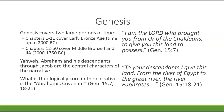Genesis covers two large periods of time. In chapters 1 through 11, it covers the early Bronze Age — that's the time up until 2000 B.C. Then from chapters 12 through 50, it covers what we refer to as the Middle Bronze I and Bronze IIA period, from 2000 to 1750 B.C.